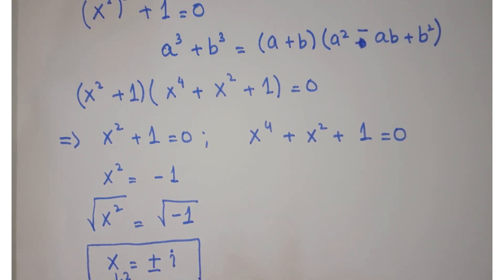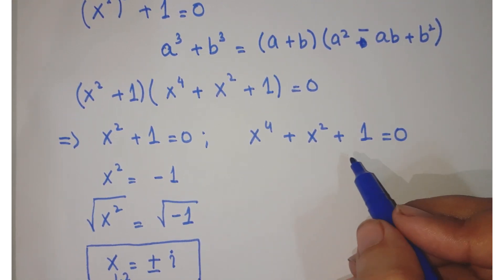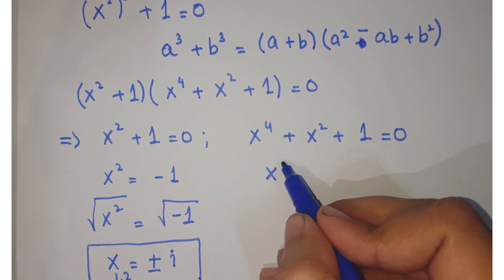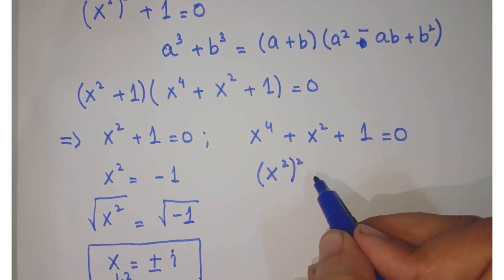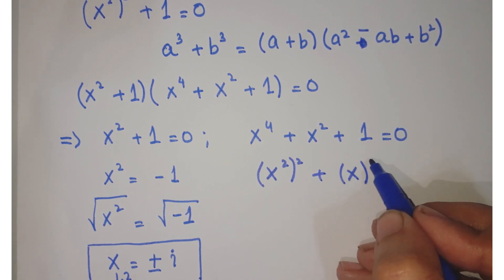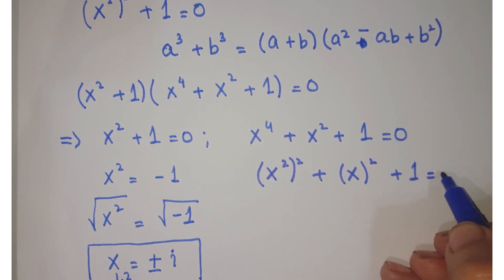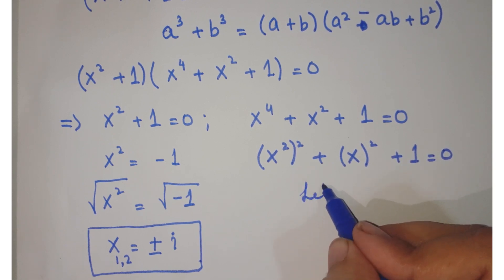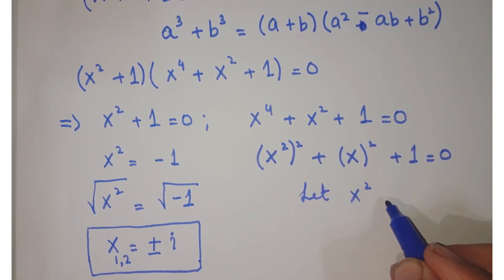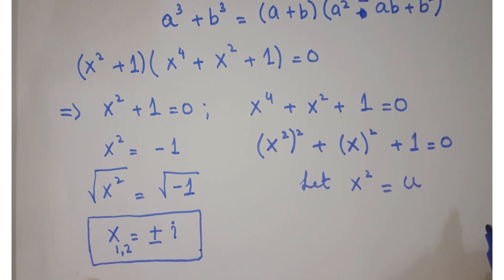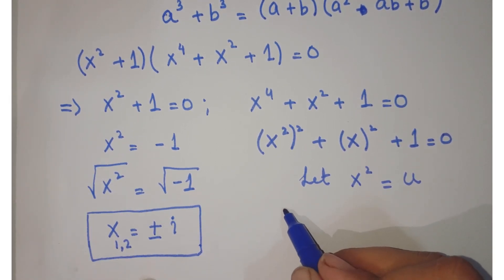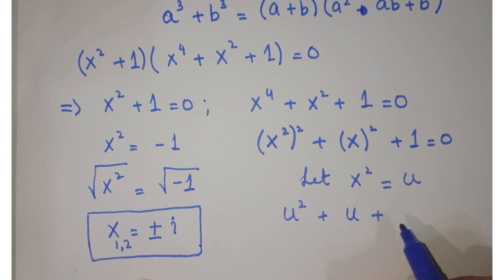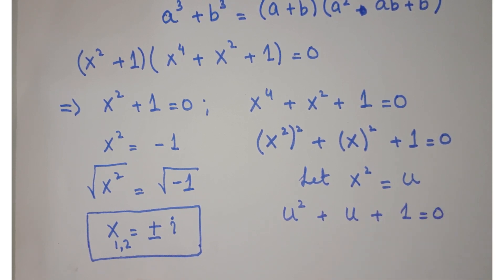Now working on x to the power 4 plus x squared plus 1 equals 0. We can write this as x squared, whole squared, plus x squared plus 1 equals 0. Let's assume x squared equals u, so we have u squared plus u plus 1 equals 0.